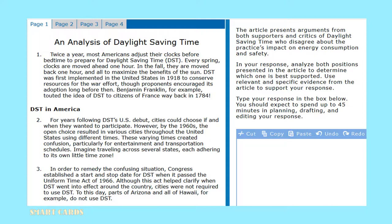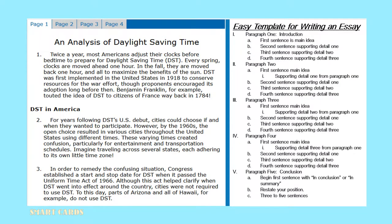An analysis of daylight saving time. The article represents arguments from both supporters and critics of daylight saving time who disagree about the practice's impact on energy consumption and safety. In your response, analyze both positions presented in the article to determine which one is best supported. Use relevant and specific evidence from the article to support your response. You should expect to spend about 45 minutes planning, drafting, and editing your response. I have included an easy template for writing an essay: about five paragraphs with an introductory paragraph, a concluding paragraph, and three to five body paragraphs. The body paragraphs are fuller expositions of your supporting details, and the concluding paragraph is a restatement of your position.